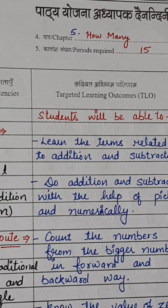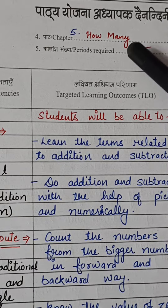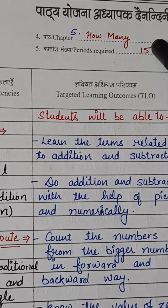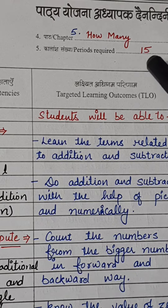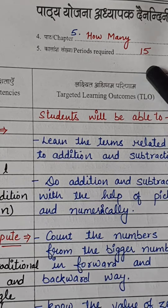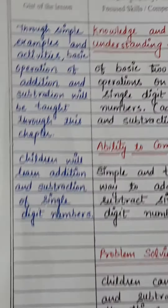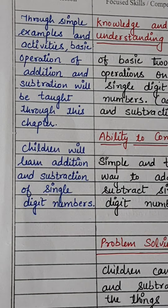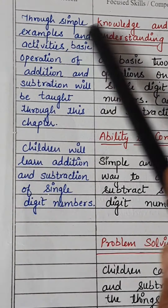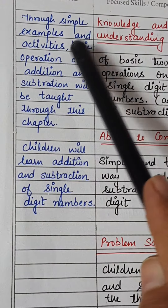Hello dear teachers, welcome to my channel. Let's talk about the lesson plan for Class 1 Maths, Chapter Number 5: How Many. We need 15 periods for this chapter, starting with a gist of the lesson through simple examples and activities.